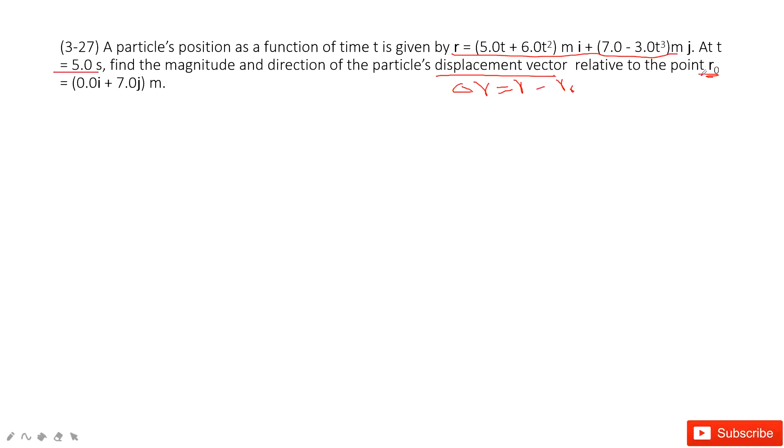The initial position is given, so we need to consider the final position. The final position is just the position at time t. So we just input t equal to 5 seconds, and then we can find this r, and then subtract the initial position.